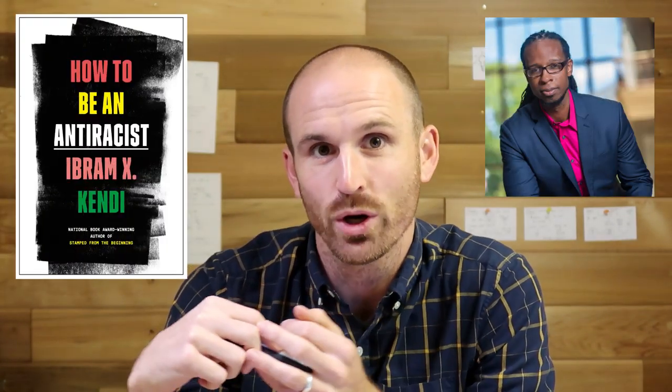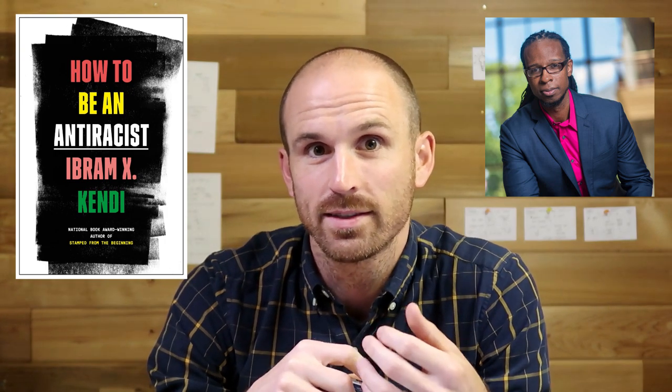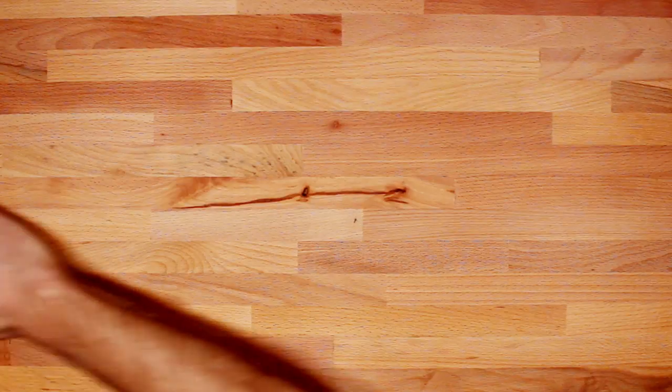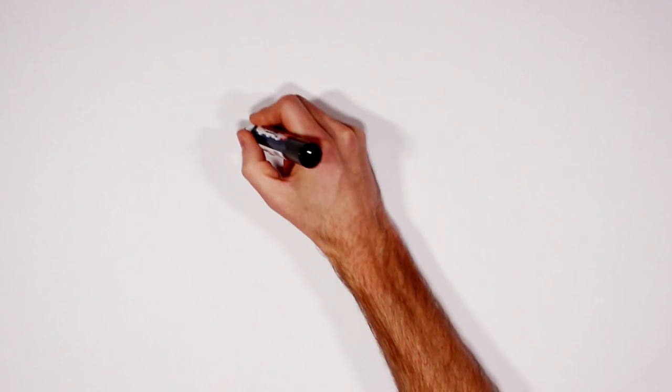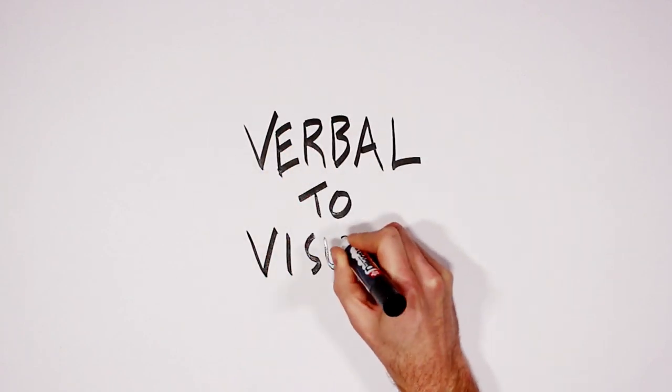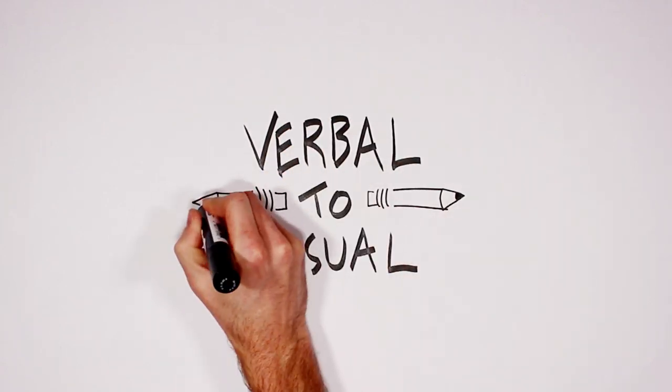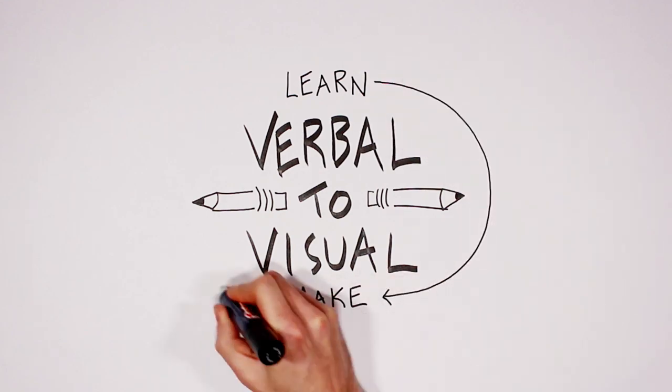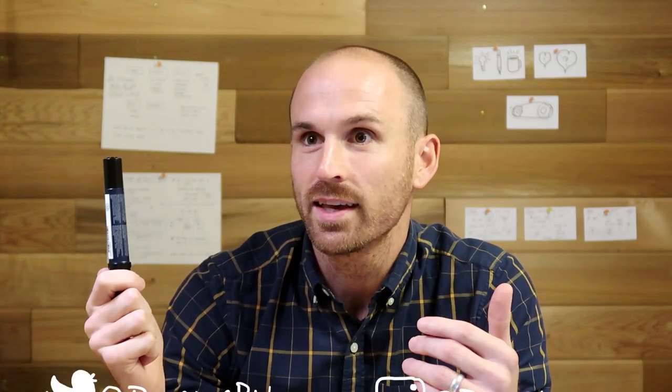Today I'm going to sketch out some ideas from the first chapter of Ibram X. Kendi's book How to Be an Anti-Racist. Let's get into it. Hello and welcome to Verbal to Visual. I am your host Doug Neal, and part of the reason that I like sketchnoting is that it's a skill that helps with two things in particular.